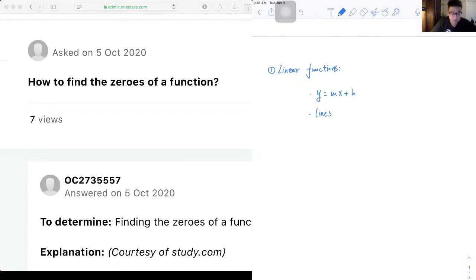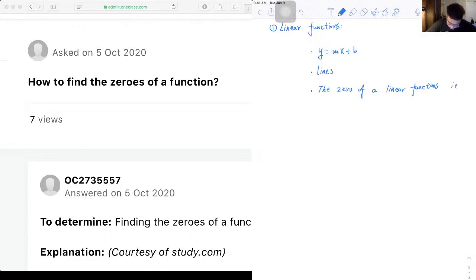The zero of a linear function is at most one, and it can be found by directly replacing y with zero then solving for x. Let's write that down. The zero of a linear function is at most one.